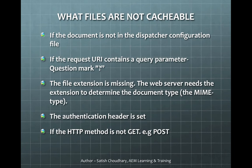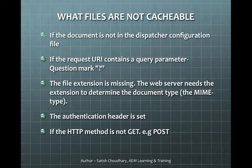When we talk about what files are cacheable, it's good to know what files are not cacheable. As mentioned before, any document not defined in the dispatcher configuration file is not cacheable. Other cases where files are not cacheable: when the request contains a query parameter — anything with a question mark or query parameter is not cacheable. If the file extension is missing, it's not cacheable. If the authentication header is set, because it's a secured request, generally secured requests are not cached. Additionally, any HTTP method which is not a GET — for example a POST request, which generally involves submission of data — is not cacheable.